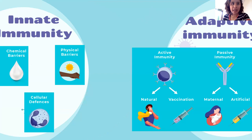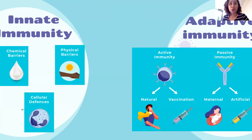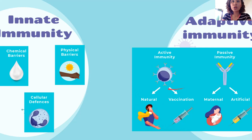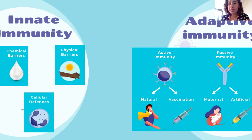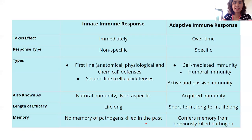For innate immunity, we will learn about physical and anatomical barriers, chemical barriers, and different cells that participate in innate immunity, also called natural immunity. For adaptive immunity, the stars are your antibodies — your B cells produce antibodies, and your T cells. The concept of vaccination, and how the mom passes antibodies to the baby through the placenta, that's all under adaptive immunity.